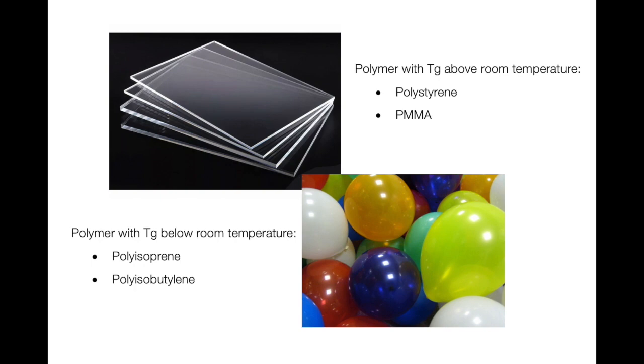Polystyrene and PMMA are hard materials at room temperature because their TG are very high, therefore they behave like glass. Balloons are made out of polyisoprene because it is soft and easy to stretch at room temperature due to its low TG.